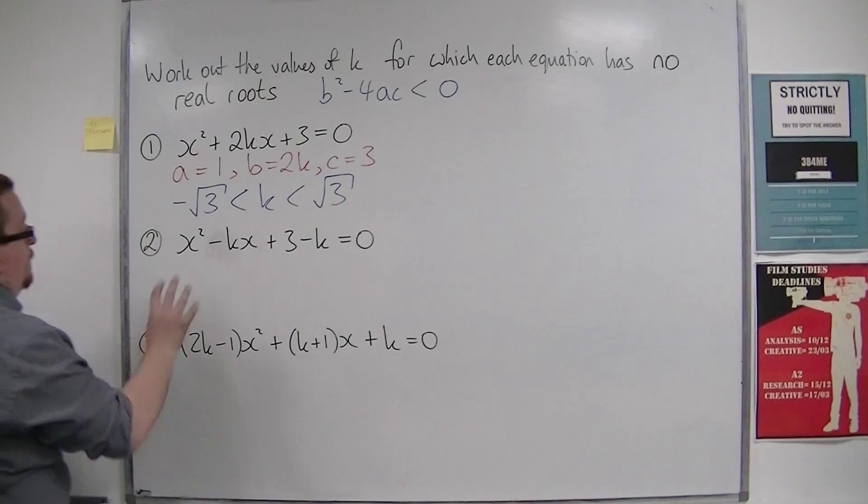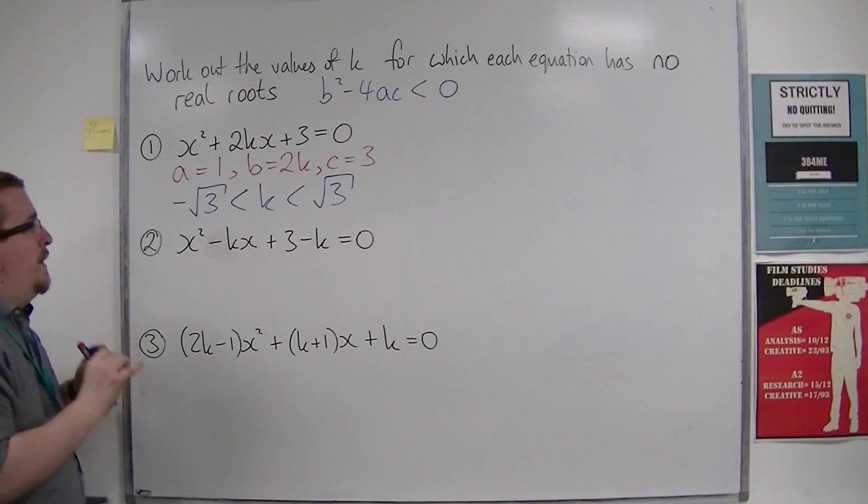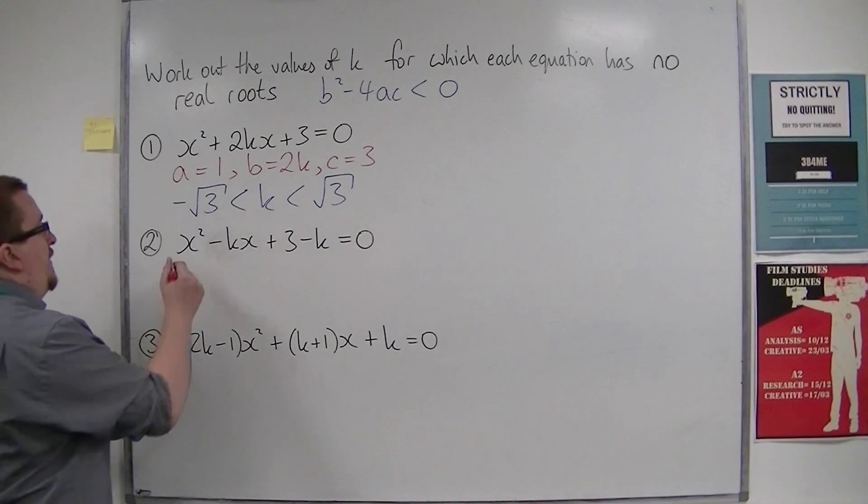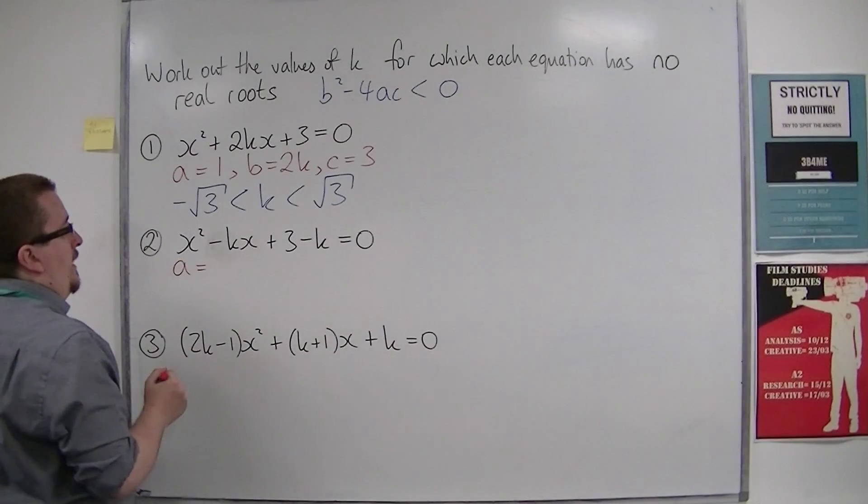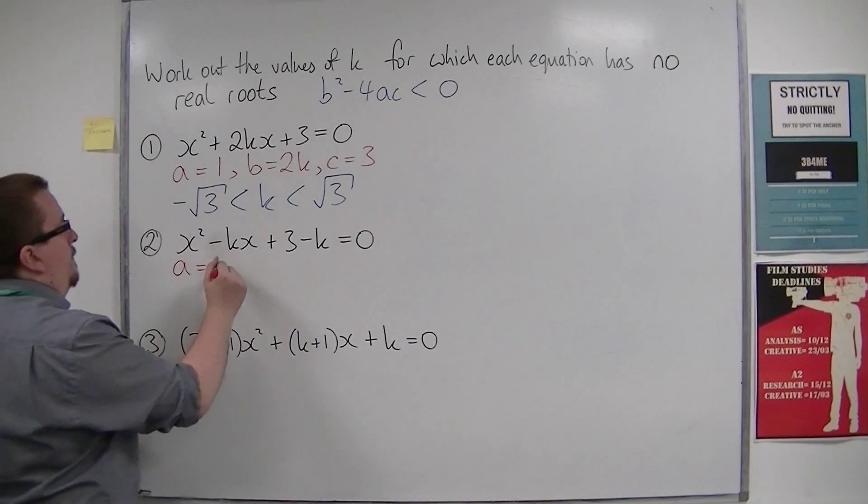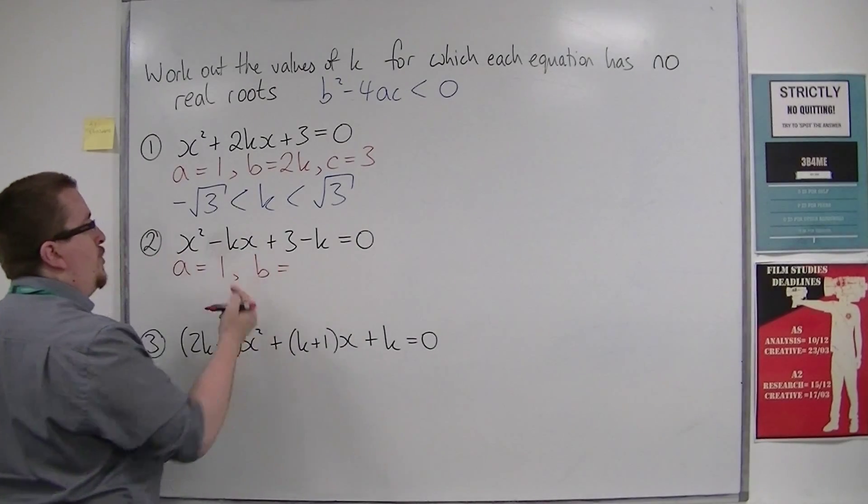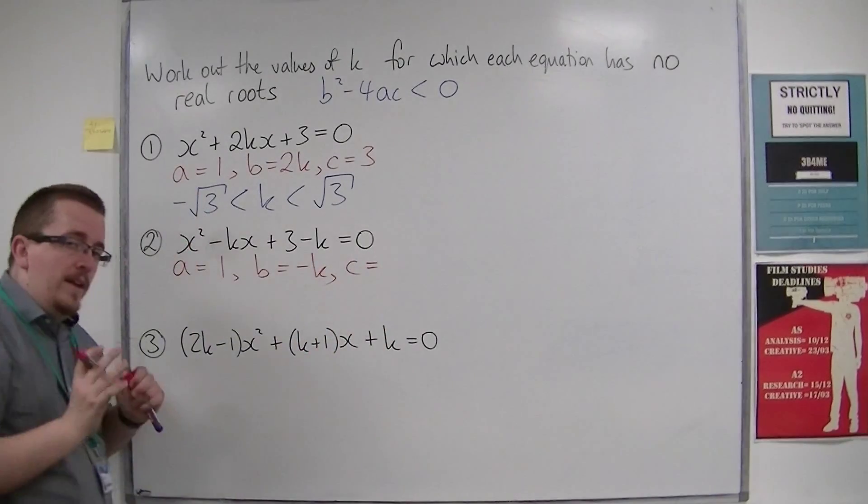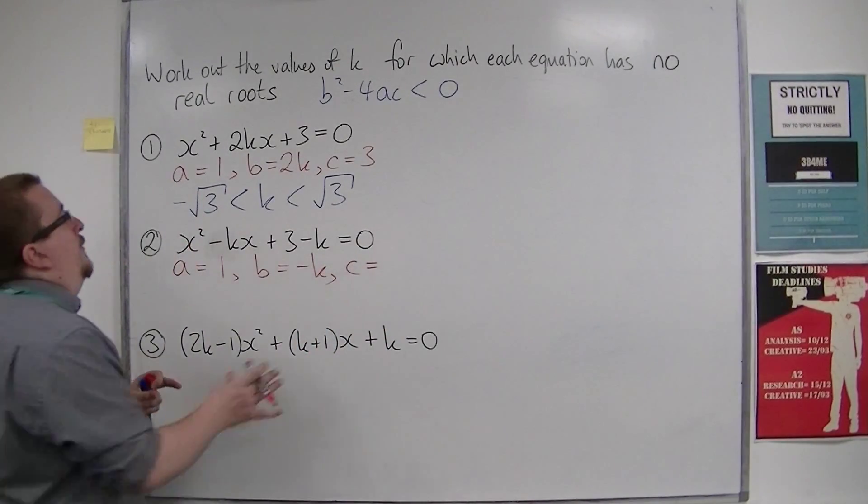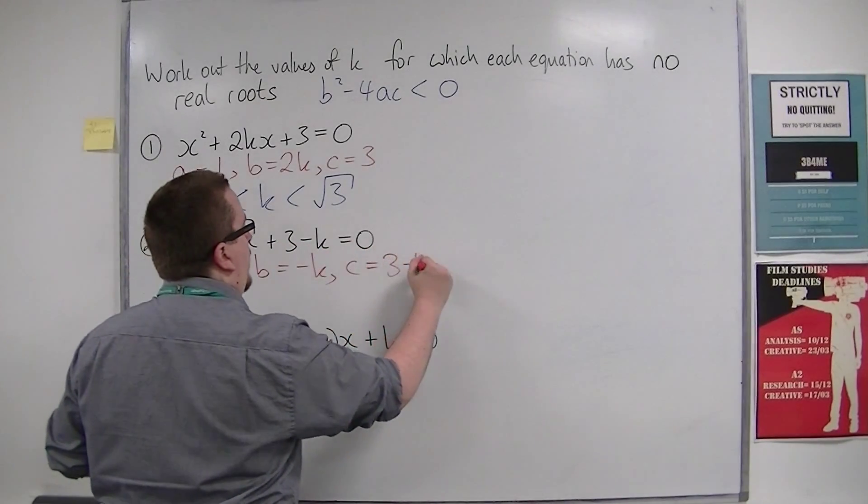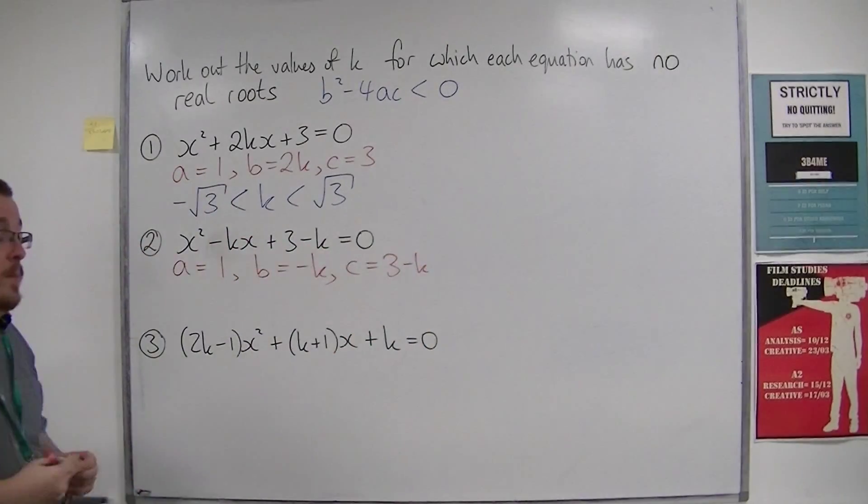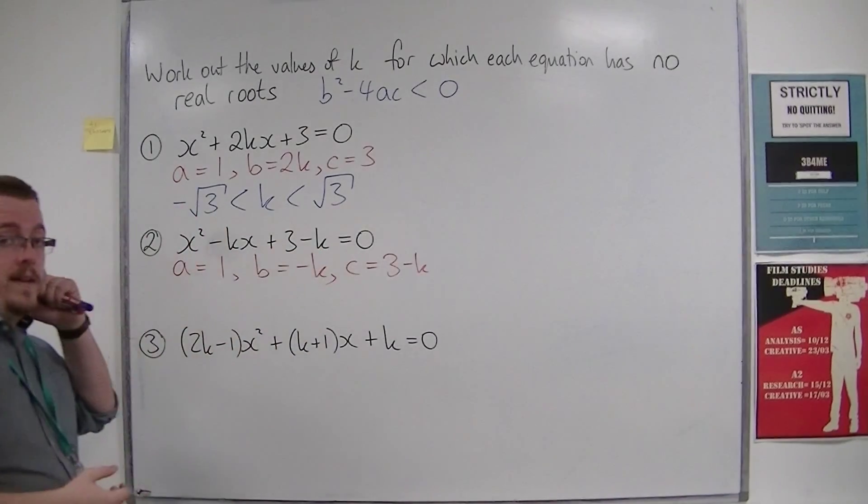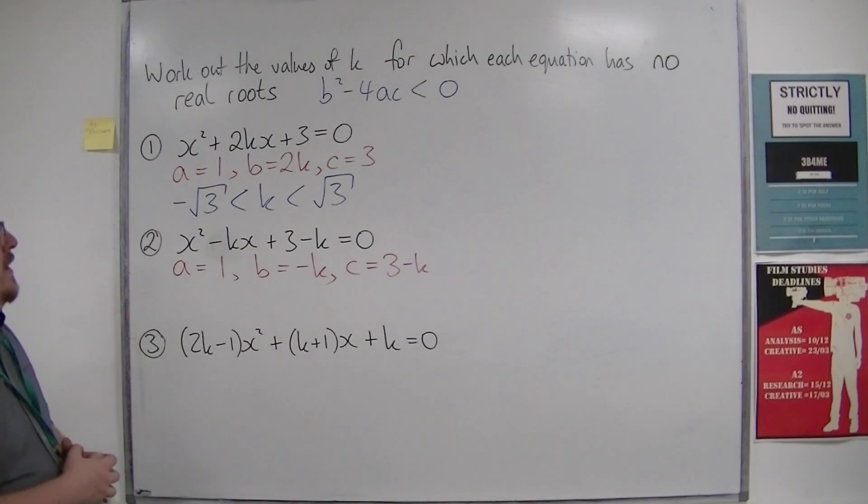Let's look at number 2: x² - kx + 3 - k = 0. First of all, identify a, b and c. a would be 1, b is the coefficient of x, so -k. Remember that c is whatever is left afterwards, so it's that whole 3 - k. In the previous video, we had an example where it was in a bracket. This time, there is no bracket.